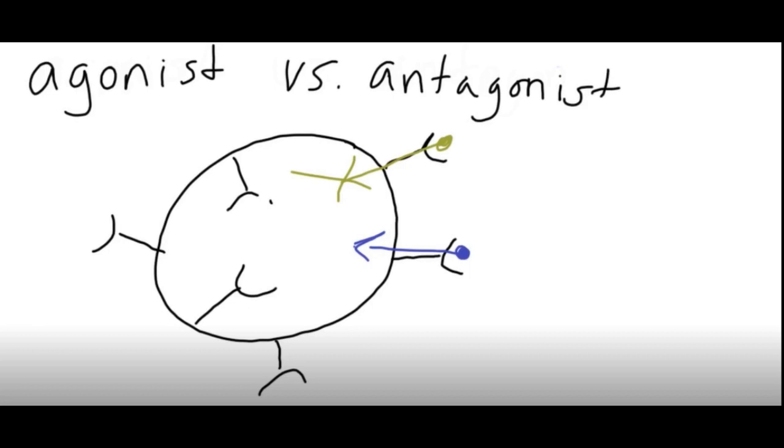In general, I think of the antagonist as the thing that's going to block something from happening. Just like in a story, the antagonist is usually blocking whatever the protagonist wants.